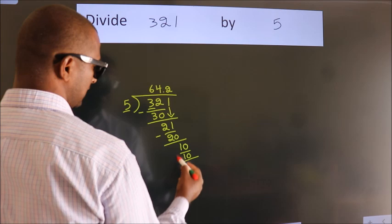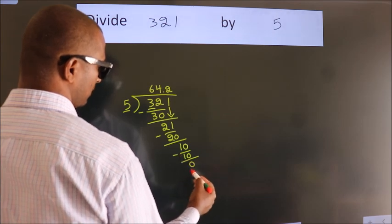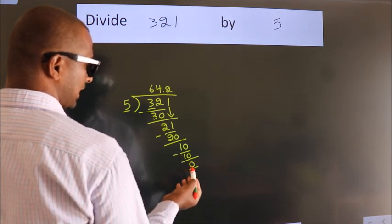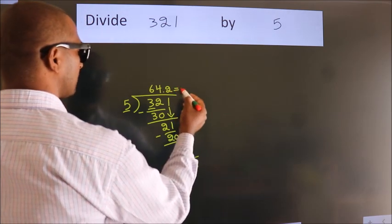Now we subtract. We get 0. We got remainder 0. So this is our quotient.